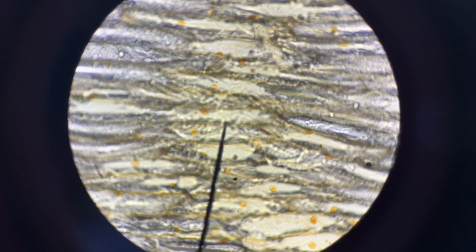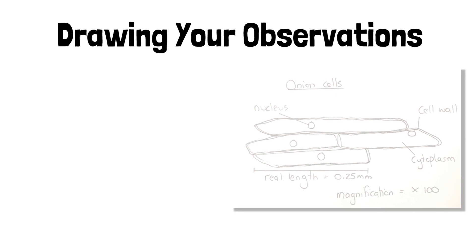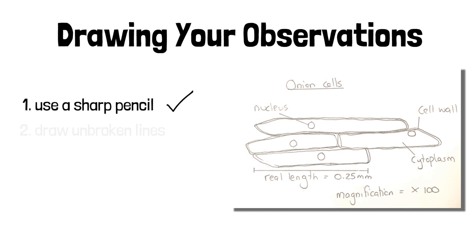Once your image is clear, you need to be able to draw your observations. Now the exam board are very specific about observations drawn at GCSE. So here is a drawing done by one of my students of the onion cells they saw. Let's check to see if they've met the criteria. So one of the first things that they have to do is to use a sharp pencil. If we look at this drawing, we can see it was done using a sharp pencil.